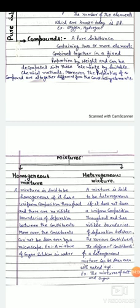A mixture is said to be homogeneous if it has a uniform composition throughout and there are no visible boundaries of separation between the constituents. Moreover, the constituents cannot be seen even by a microscope. Example, a mixture of sugar solution in water.